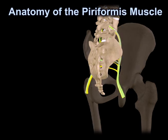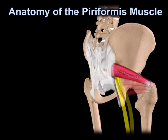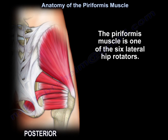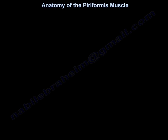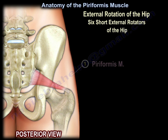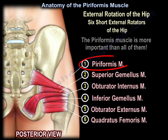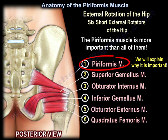Anatomy of the Piriformis Muscle. The Piriformis Muscle is one of the six lateral hip rotators. This is the list of the lateral hip rotators. The Piriformis Muscle is more important than all of them, and we will explain why it is important.